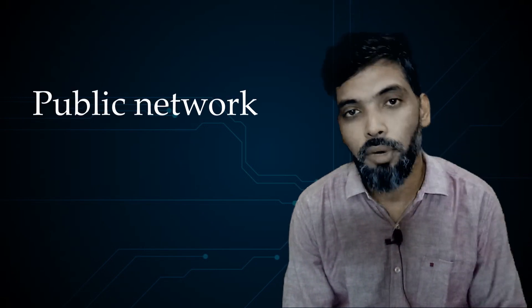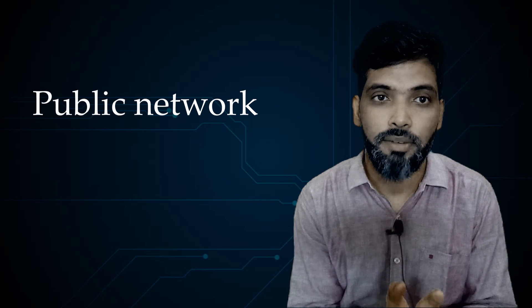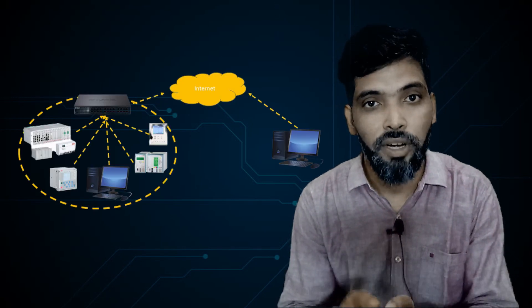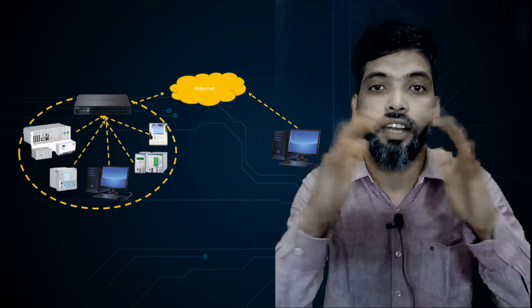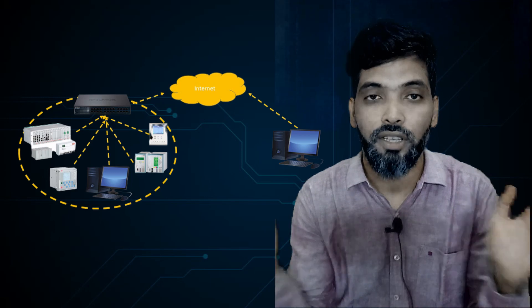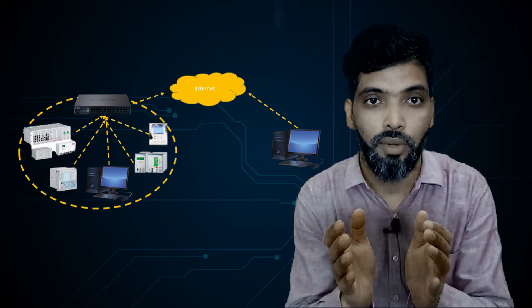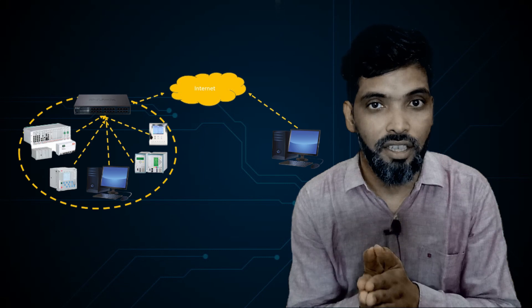Now we'll discuss what is a public network. A public network is when your SCADA system is connected to the internet, and from the internet it goes to another private network. In between the two private networks, there is a space called the public network. That public network is always very dangerous — whatever data you are sending from one place to another through a public network, anybody can enter and hack your system.